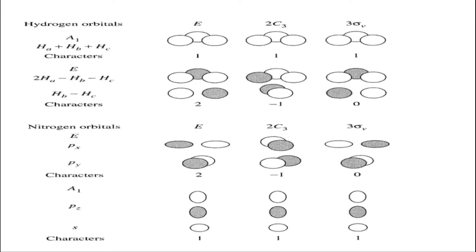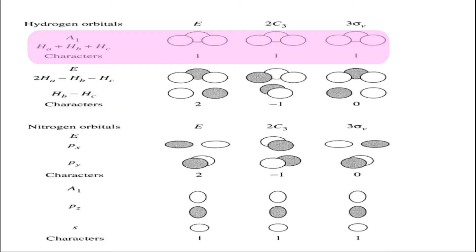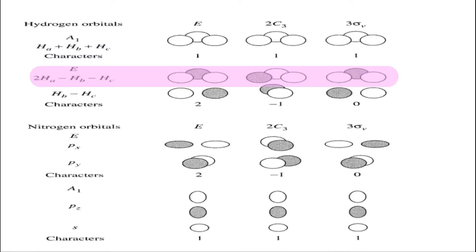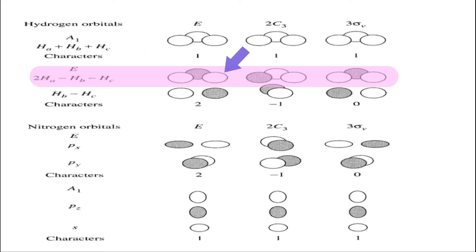The three hydrogens produce LCAOs of two symmetries: A1 and E. In the A1 symmetry, all three hydrogens have the same wave function — consider all positive — giving a fully symmetric combination (1, 1, 1), which corresponds to the A1 Mulliken notation. The other possibility for E symmetry: one hydrogen has one wave function and the remaining two have the opposite.